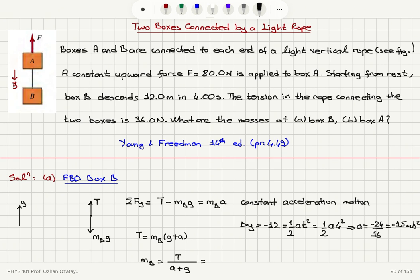And the tension in the rope was 36 newtons, as you can see here. So, we're going to have 36 divided by a plus g, which is 9.8 minus 1.5 meters per second squared. And that gives us, you can see we have three significant figures in all the numbers, it's 4.34 kilograms.